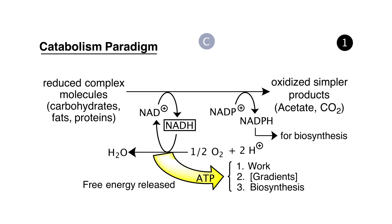In panel C, we start with catabolism — the energy-yielding pathways. A reduced molecule is one abundantly supplied with electrons; examples are carbohydrates, fats, and proteins — typically our foods. Catabolism involves liberating the electrons from those reduced substances and transferring them to mobile electron carriers such as NAD+ to form NADH, or NADP+ to form NADPH. The process of removing electrons from a molecule is called oxidation, and the oxidation products are, for example, carbon dioxide that we breathe out, or lactate and other simple molecules that are excreted.